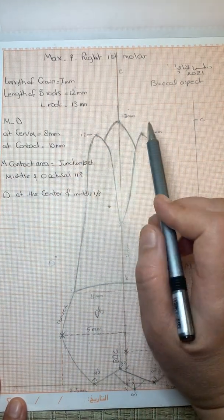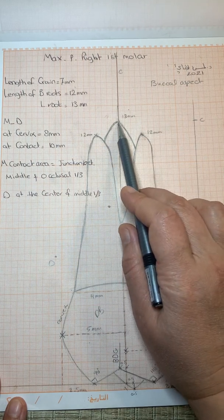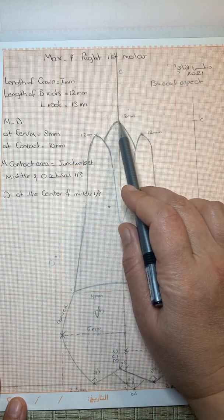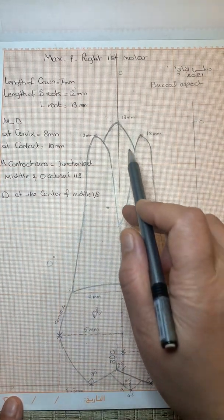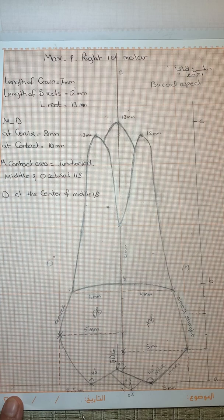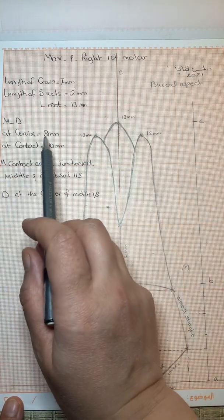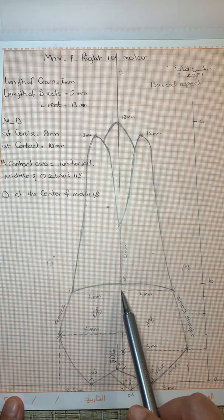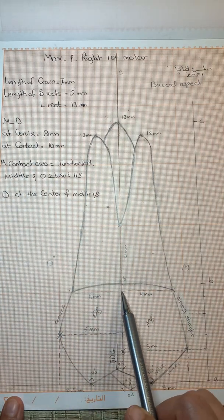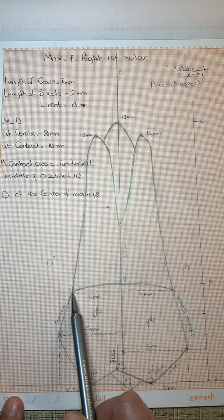From B to C is 12 millimeters for the buccal roots and 13 millimeters for the lingual root, which is longer. All three roots can appear from this aspect. The first measurement is the mesio-distal dimension at the cervix, which is eight millimeters — one millimeter from B, four millimeters toward the mesial surface and four millimeters toward the distal surface.